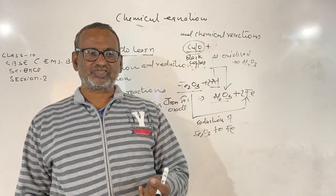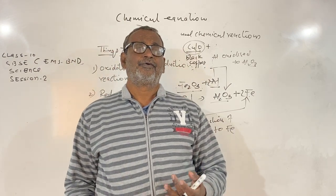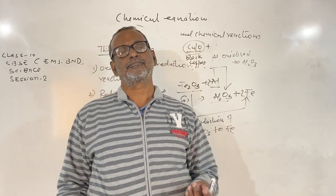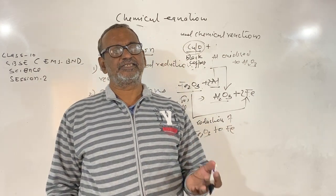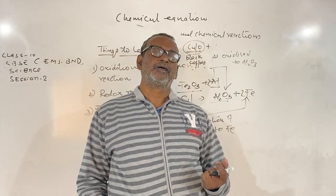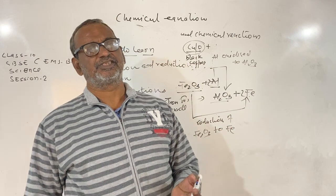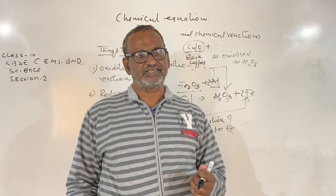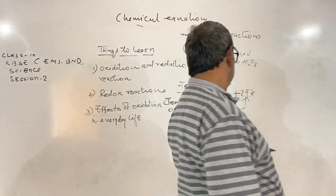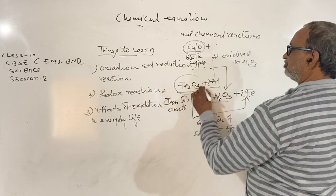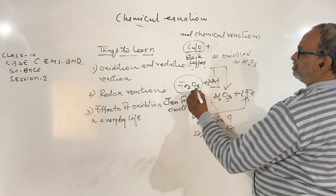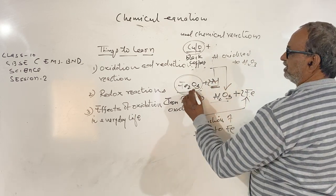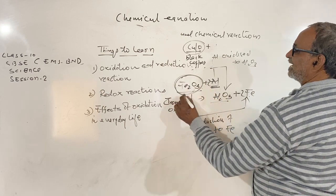The substance which gives its oxygen, or which removes hydrogen from a substance, is called an oxidizing agent. For example, in this reaction, Fe₂O₃ is providing oxygen for the oxidation of aluminium. So Fe₂O₃ is an oxidizing agent.